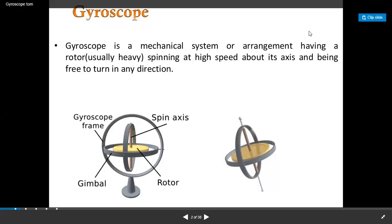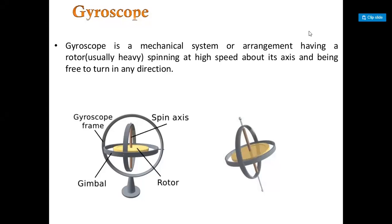Welcome back friends. Today we are going to study about the gyroscope. The gyroscope is a mechanical system or arrangement having a rotor spinning at high speed about its axis and being free to turn in any direction. The gyroscope has only one axis of stabilization which has balance from all eight directions and moves towards the momentum.